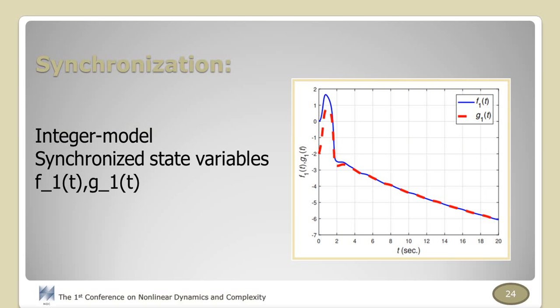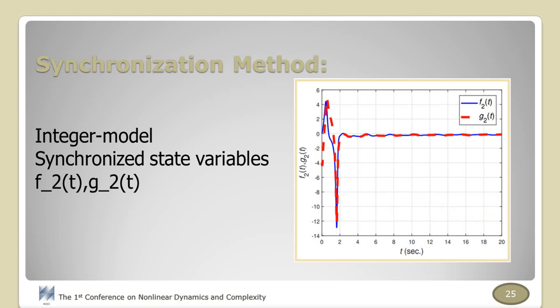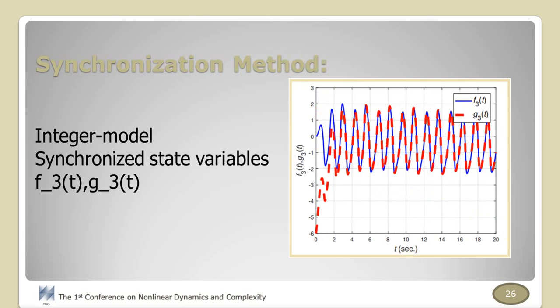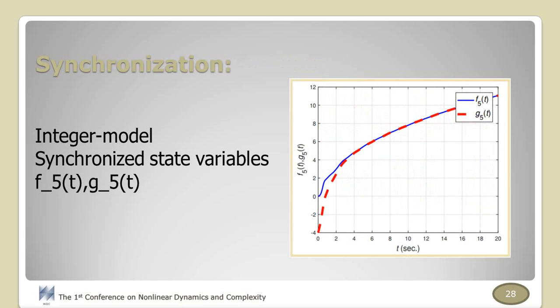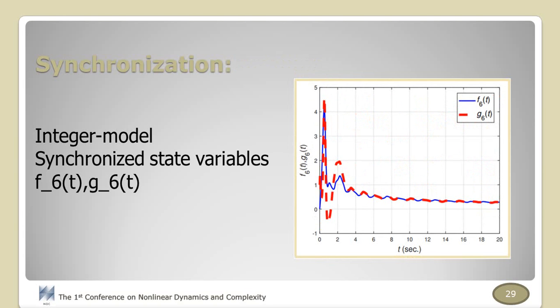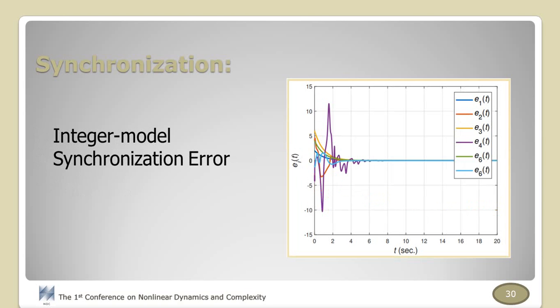Synchronized state variables of integer order cardiac oscillators are shown in this figure, and other state variables as well: F2 and G2, F3 and G3, F4 and G4, F5 and G5, and F6 and G6. As it is obvious, state variables are greatly synchronized. And this figure shows the error of synchronization. Also, it is obvious that all errors converge to zero.